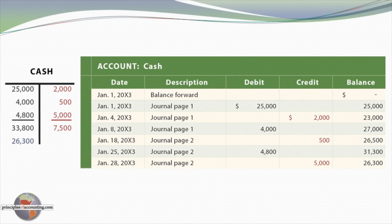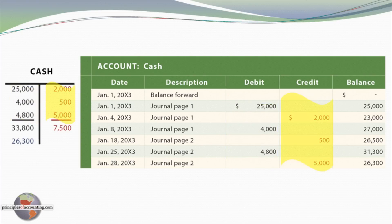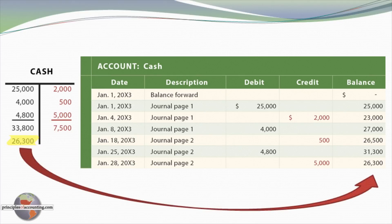Here's an illustration of a T-account on the left for cash, and on the right-hand side of the screen I've produced the actual page from the general ledger for cash. You'll notice all of the debits to cash in the ledger: $25,000, $4,000, and $4,800 — those correspond to the left-hand side of the T-account. The credits correspond to the right-hand side. Total debits are $33,800 and total credits are $7,500, so debits exceed credits by $26,300, which is the balance found in the general ledger account for cash.